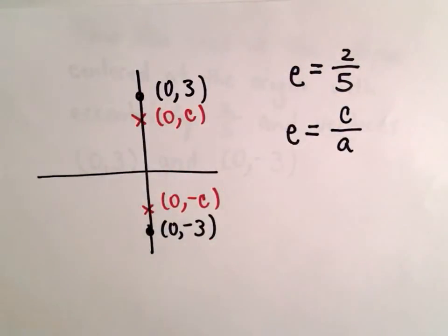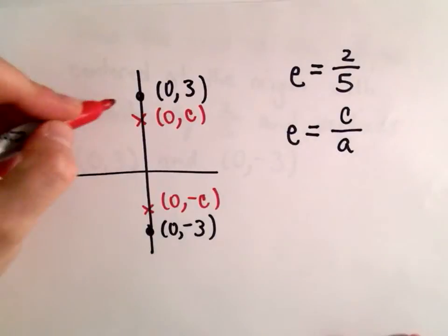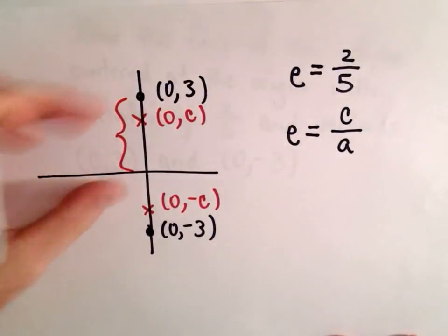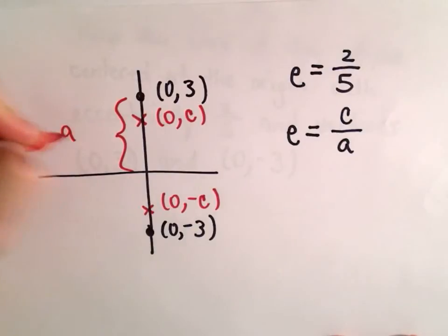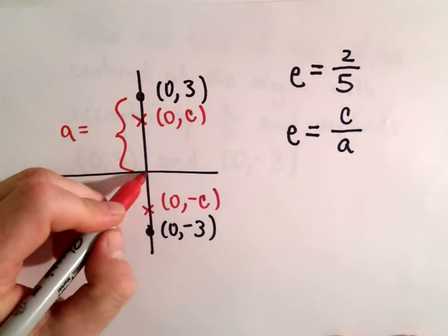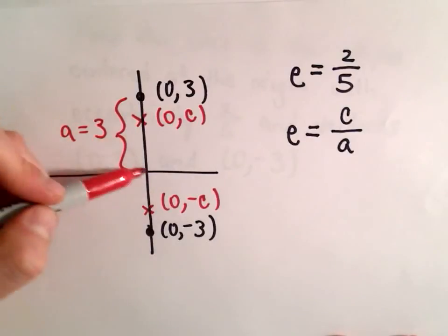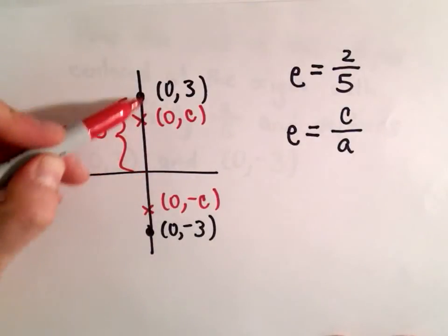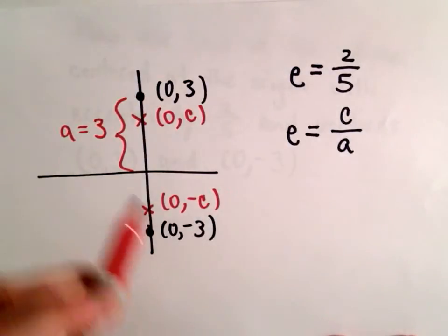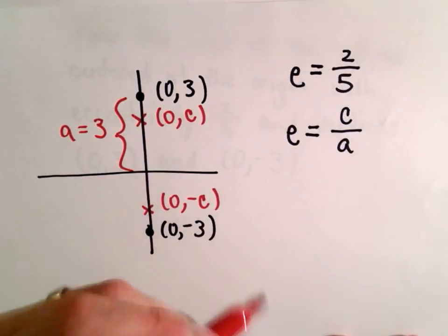But also recall that the distance from our vertices to wherever it's centered, that's our a value. So in this case, our a value, since it's centered at the origin, would equal 3, since you're going 3 units to arrive at one of those vertices. So a equals 3.